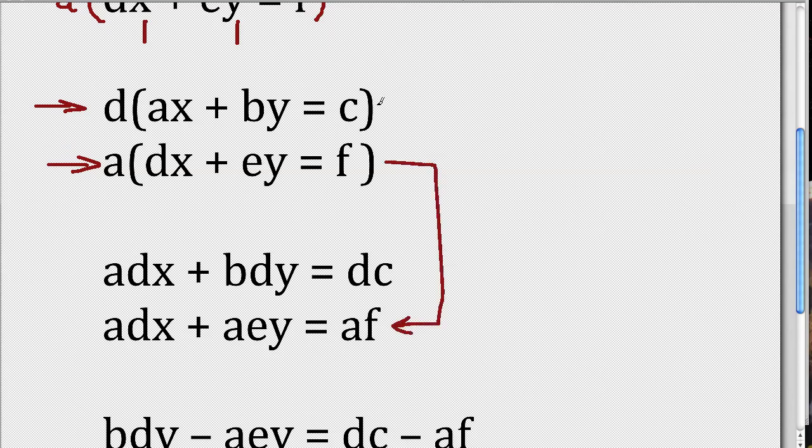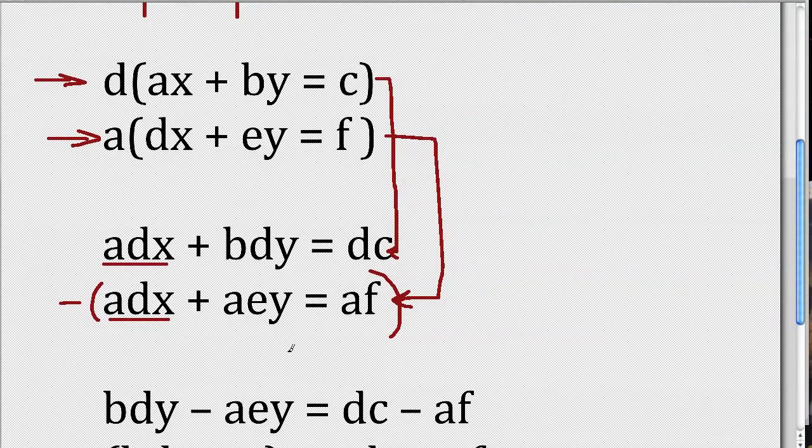Okay, so this is the first equation, and this is the second equation. So the trick here was I get ADX in both here and here. So if I subtract this whole bottom equation from the top equation, I eliminate X. So let's see what happens when I do that. When I subtract ADX from ADX, that goes away. When I subtract AEY from BDY, I get this thing.